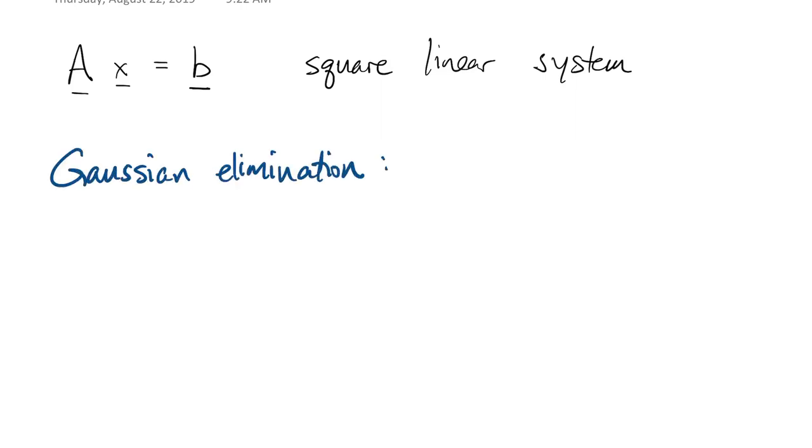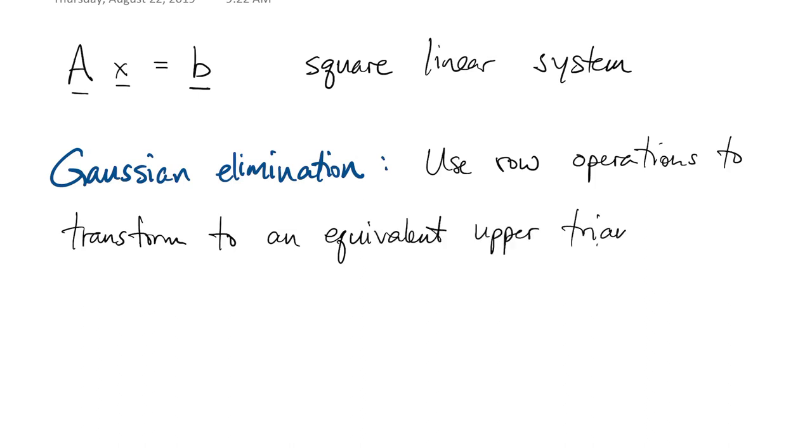So how do we solve a square linear system of equations AX equals B? Well, what you learned in your first linear algebra course is Gaussian elimination, or row elimination, and in that process you use row operations to transform the original system to an equivalent upper triangular system.